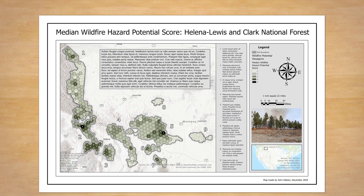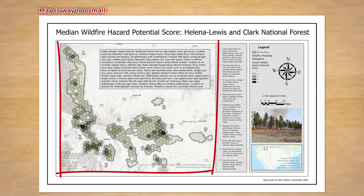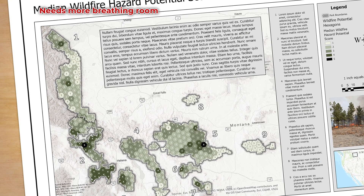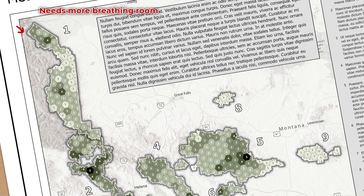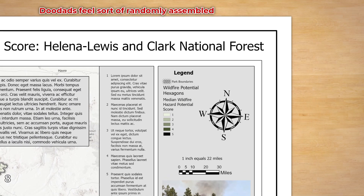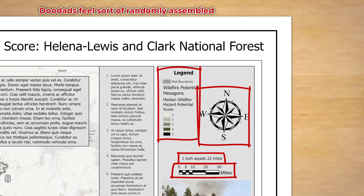Let's walk through this layout's issues. Take a look at the proportion of this layout's real estate that the map actually occupies — it's not much. It's like putting baby in a corner. Even though I want to maximize the map's size, it still comes way too close to the edge and needs more breathing room. These surrounds are kind of placed hodgepodge and give a messy look.